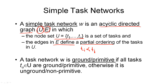Note that the graph has to be acyclic. Task networks, like tasks, can be ground or primitive or both. A task network is considered to be ground if all the tasks in it are ground — not just one, but all of them. And it's considered primitive if all the tasks in the network are primitive. It's ground and primitive if both properties hold for all the tasks in the network.